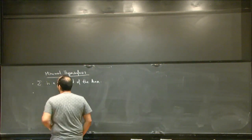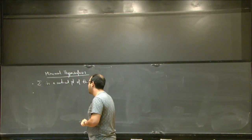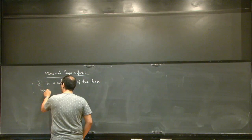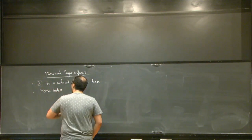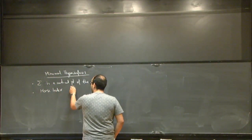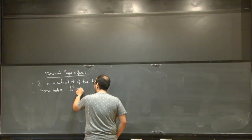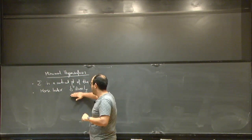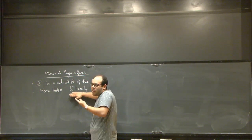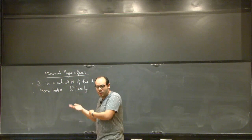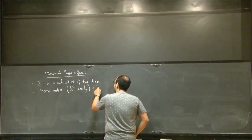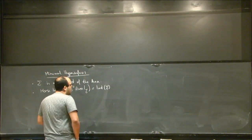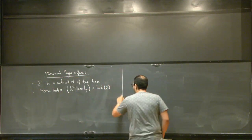And then, as such, we can talk, for example, about the Morse index of these subjects, which is the second variation of the area on these subjects. So this is a bilinear, a quadratic form. So and as such, we can look at the index of this. So this we call the index of sigma. And this is what minimal surfaces are.